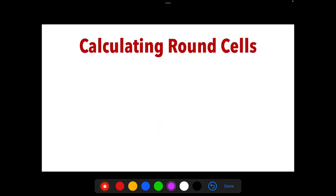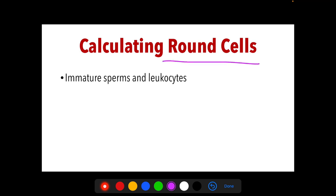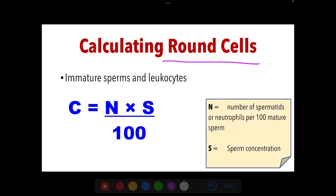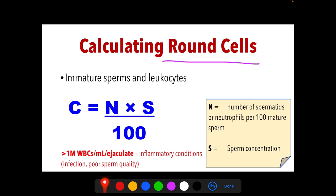Round cells — immature sperms and WBCs — must not be included in sperm concentration or count counting and can be examined separately. The formula for round cells is N × S ÷ 100, where N is the number of spermatids or neutrophils per 100 sperms and S is the sperm concentration. A result of greater than 1 million WBCs per mL per ejaculate indicates an inflammatory condition — infection or poor sperm quality.